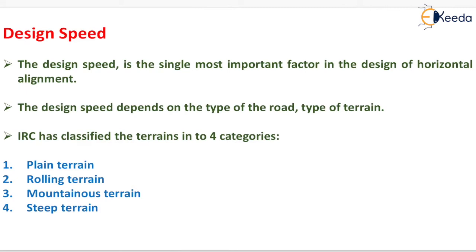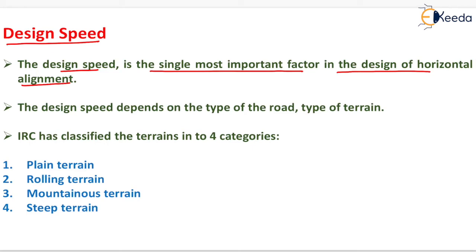The design speed is the single most important factor in the design of horizontal alignment. The design speed depends on the type of road and the terrain category, that is the type of terrain.